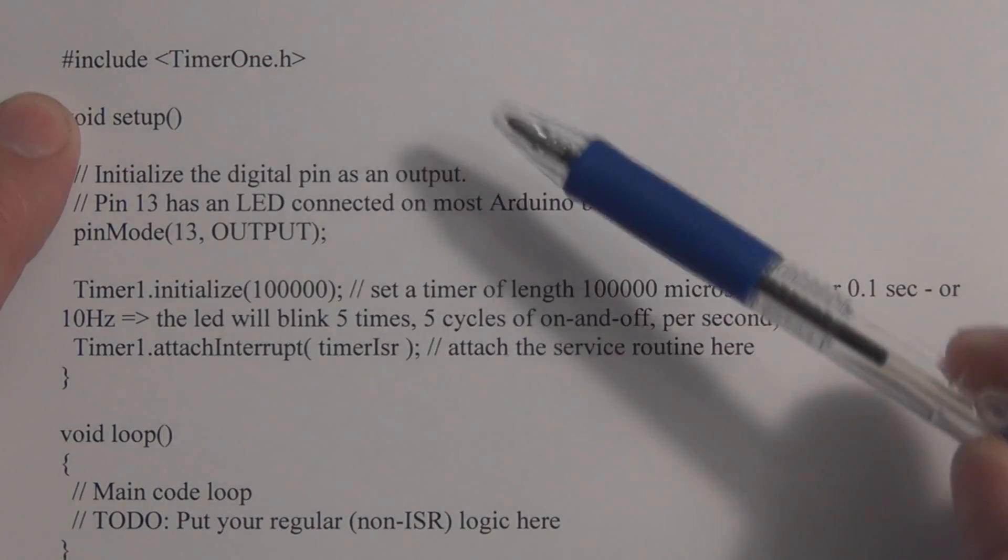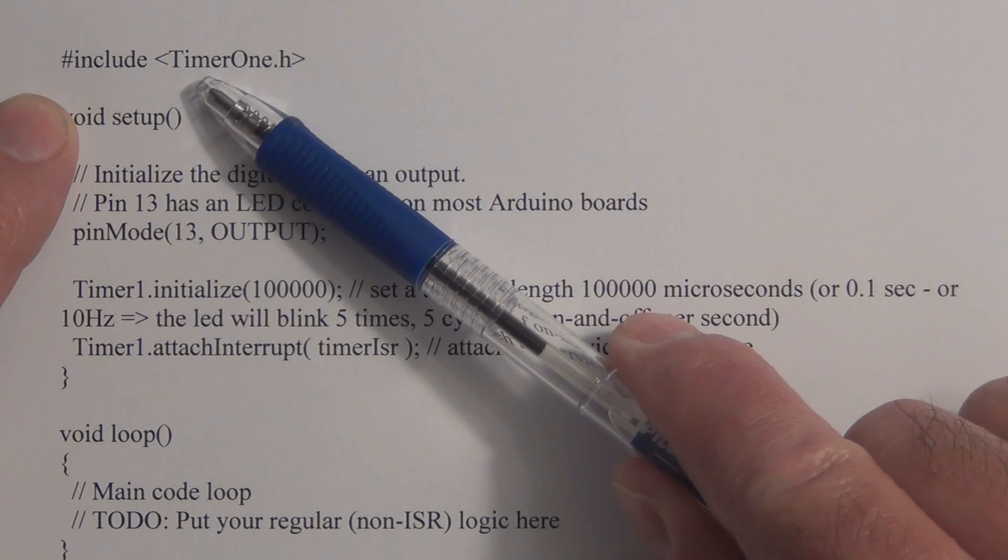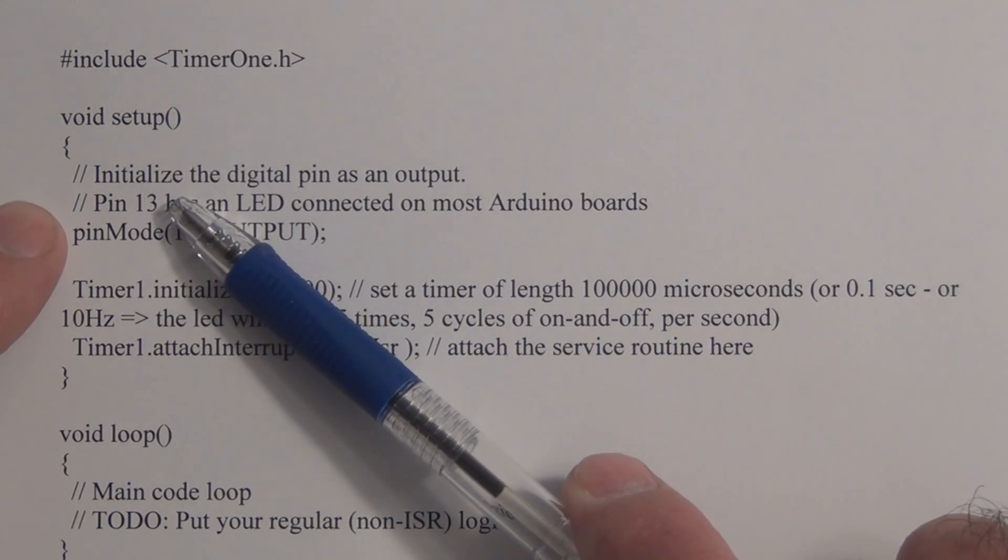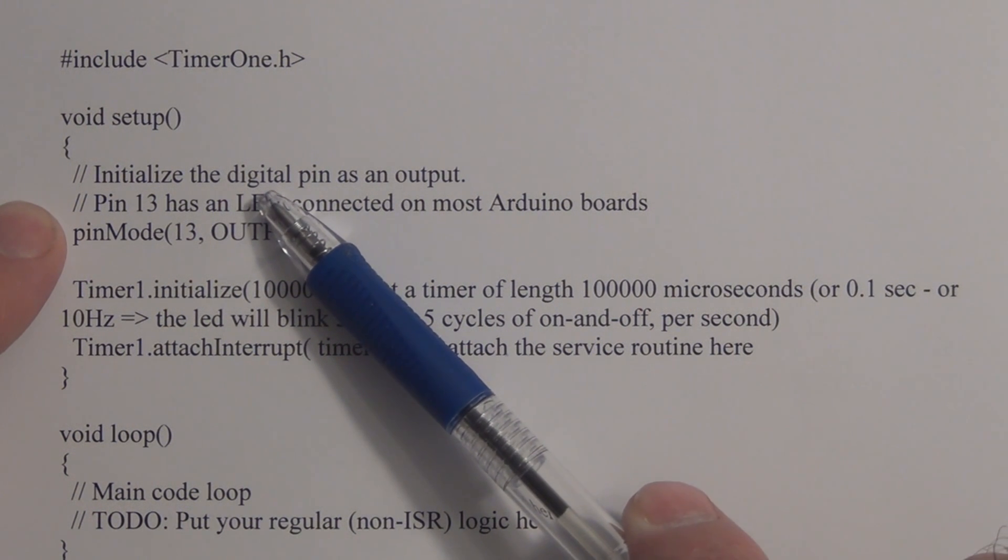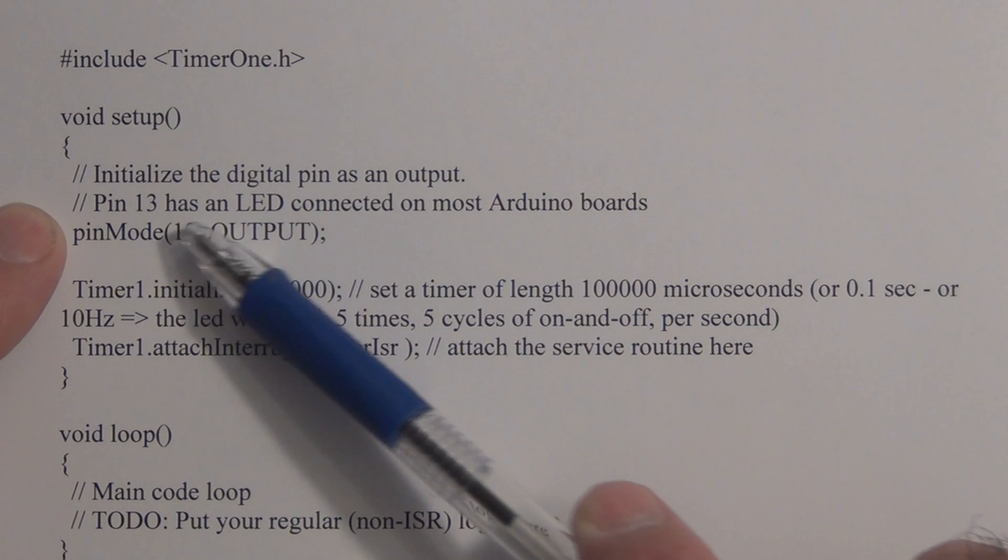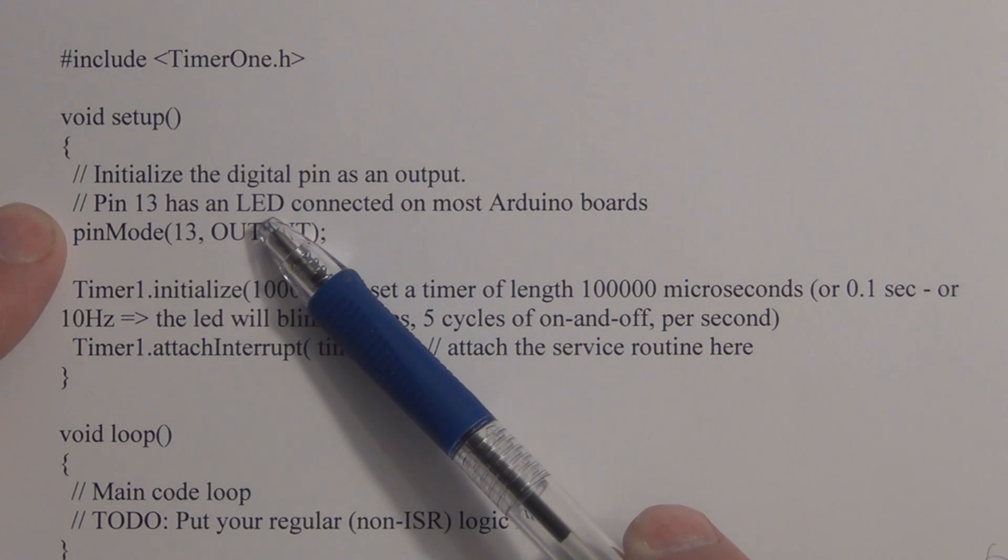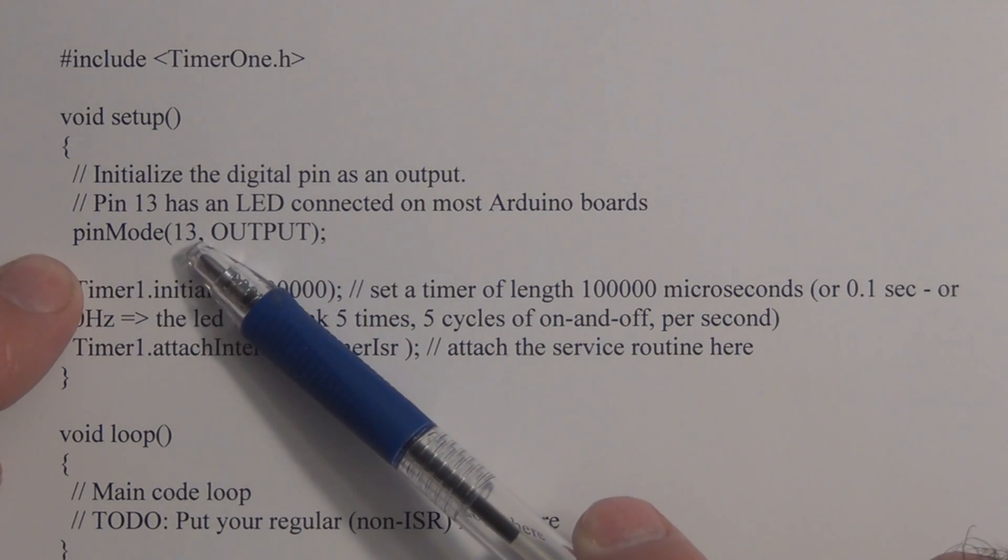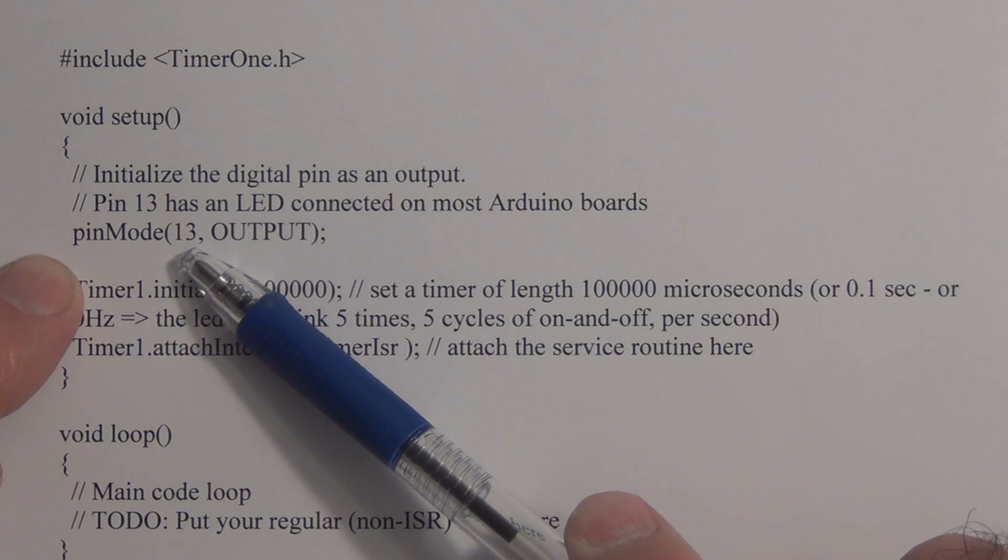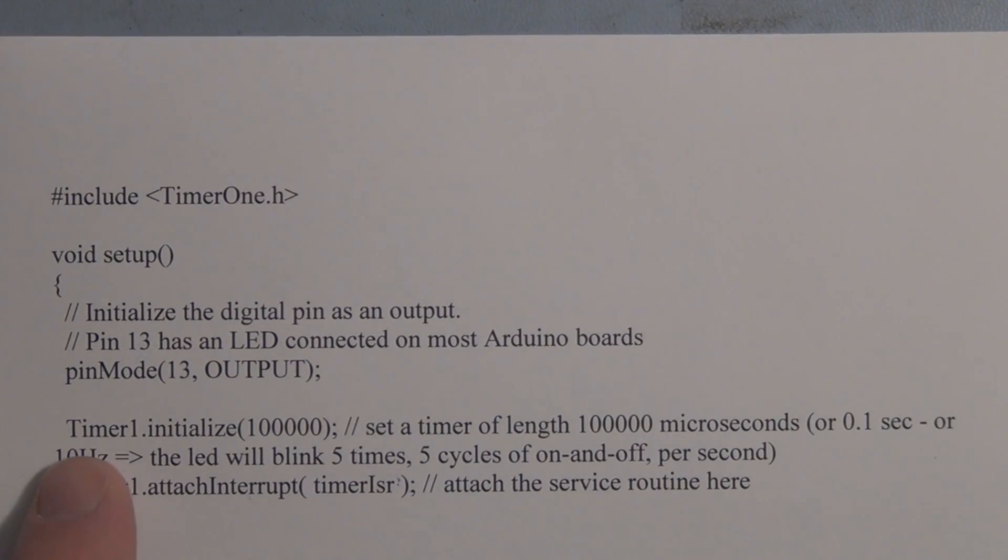Just like any other library, you have to use include to bring in the resources of this Timer One .h library. Here we have a void setup where we're going to initialize the pin, the digital pin, as an output. We're going to call pin 13, we're going to define it as an output. Pin 13 physically is already connected also to that onboard surface mount LED.